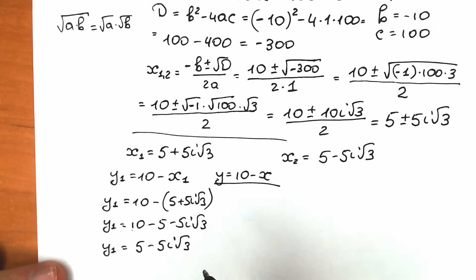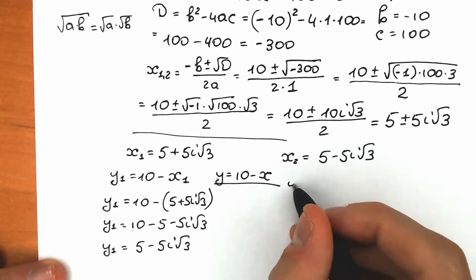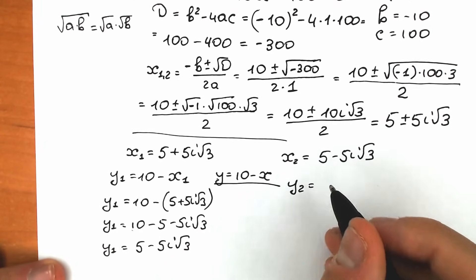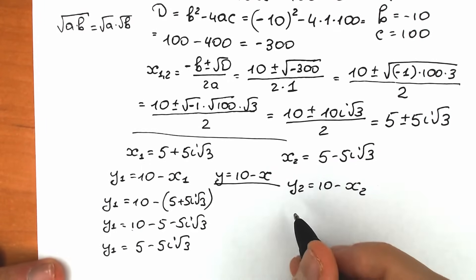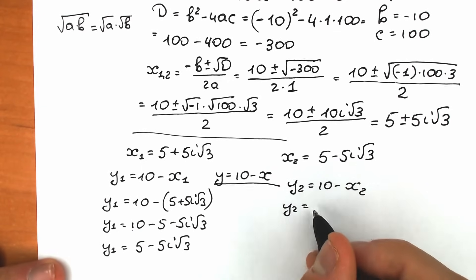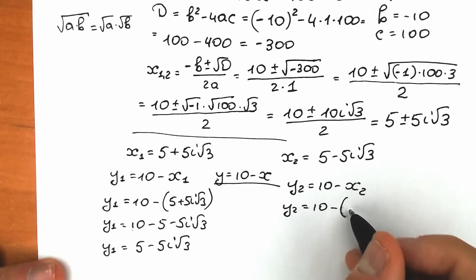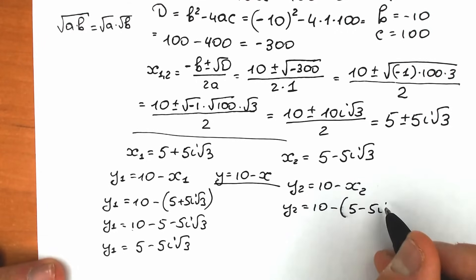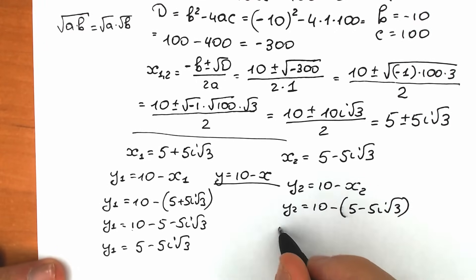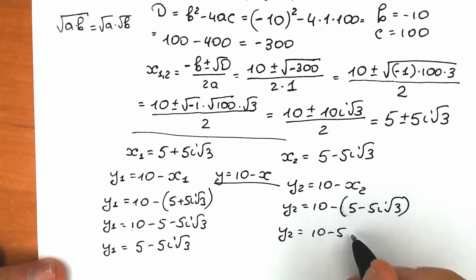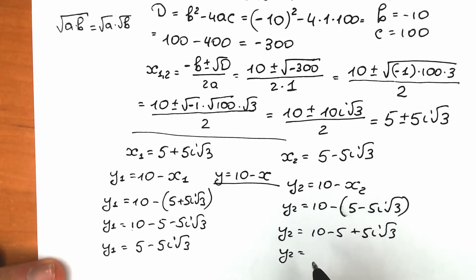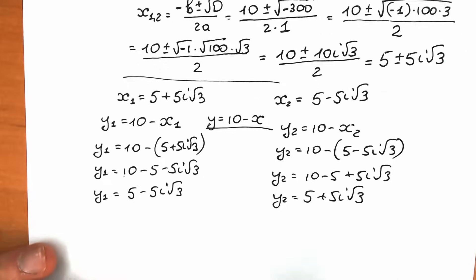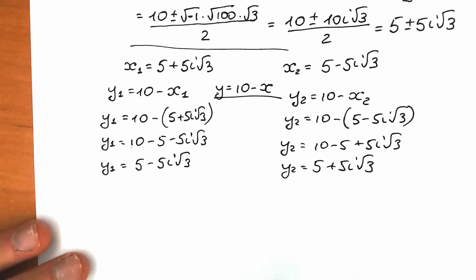By the same logic, y₂ equals 10 minus x₂. So y₂ equals 10 minus (5 minus 5i square root of 3), which gives y₂ equals 5 plus 5i square root of 3. We've solved the system.